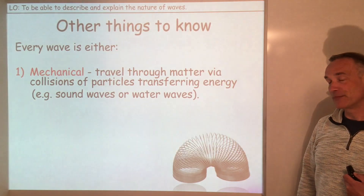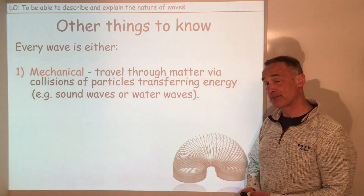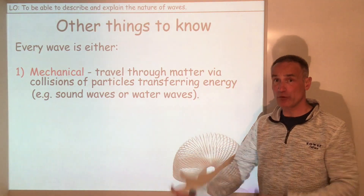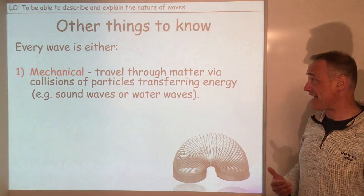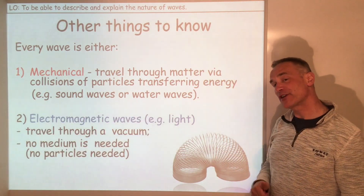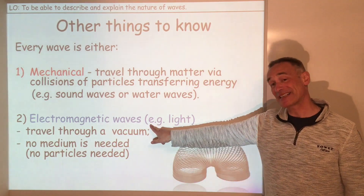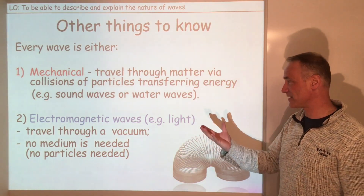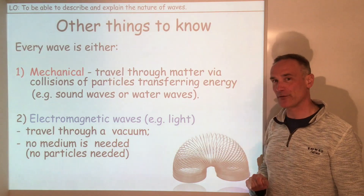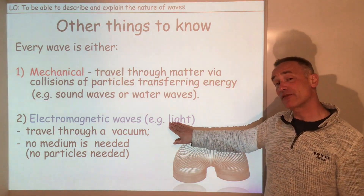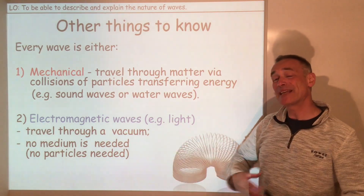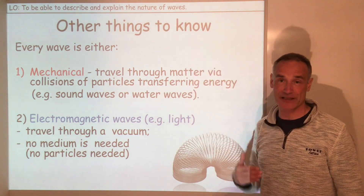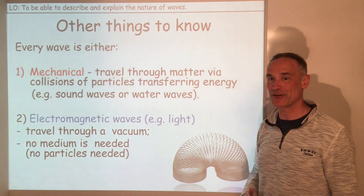One more thing before we finish. We've got what are called mechanical waves — those are waves that need a medium to travel in. Things like water waves need water particles; sound waves need air. The other type of wave, which you're going to look at in future lessons, is electromagnetic waves, like radio, microwaves, infrared, ultraviolet, gamma rays, X-rays, and light. Light can travel through a vacuum and it doesn't need any particles, because a vacuum doesn't have any particles. Light gets from the sun to us — there's nothing between the sun and us; it is a vacuum until you get to our atmosphere.